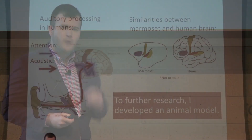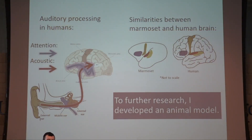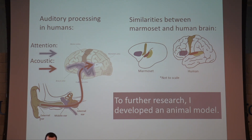So enter the marmoset. The marmoset is a primate with a very similar brain structure to ours, as can be seen by these four colored areas that we have in common, which are necessary for vocal communication in both species. My research is actually developing the marmoset as the animal model for cocktail party research by emulating key aspects of a cocktail party for monkeys.